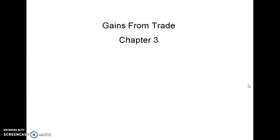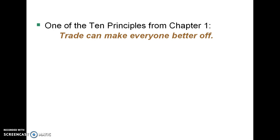In this chapter, we're going to give a little bit of a proof on how trade can make everyone better off. We're going to look at the gains from trade. The principle in Chapter 1 was Principle 5, which said trade can make everyone better off — including trade between individuals, between states, and between nations. But there wasn't really a proof of how this could happen. So in this chapter, we're going to show the proof of how both parties can be better off through trade.